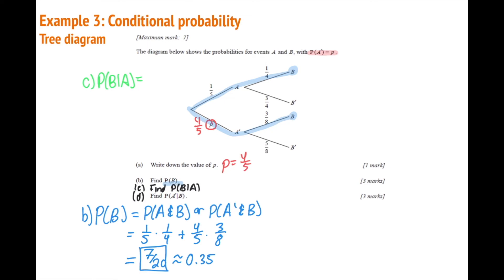Part c: find the probability of B given A. Since we're given that A has happened, we are already on that branch of the tree diagram. Looking at the diagram, the probability of B happening from that point is one-fourth.